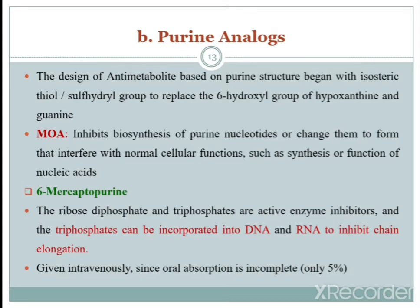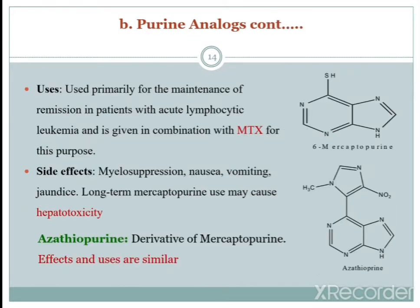Mercaptopurine is given intravenously since oral absorption is incomplete. It is used primarily in the maintenance of remission in patients with acute lymphocytic leukemia and is given in combination with MTX (methotrexate), which is a folic acid analog. The side effects of 6-mercaptopurine include myelosuppression, nausea, vomiting, and jaundice.